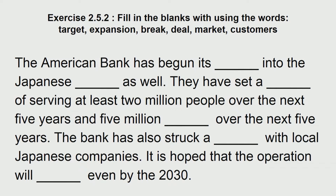Exercise 2.5.2: fill in the blanks using the words target, expansion, break even, deal, market, customers. The American bank has begun its dash into the Japanese dash as well. They have set a dash of serving at least 2 million people over the next few years, and 5 million dash over the next 5 years. The bank has also struck a dash with local Japanese companies. It is hoped that the operation will dash even by 2030.